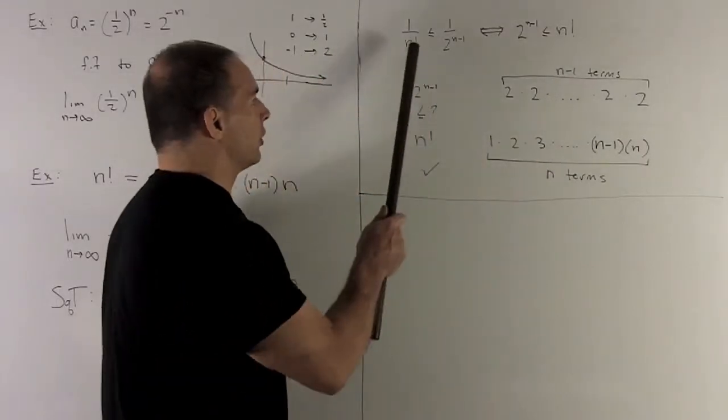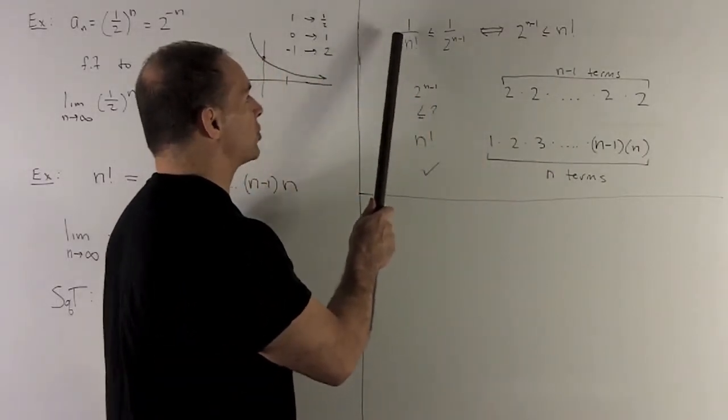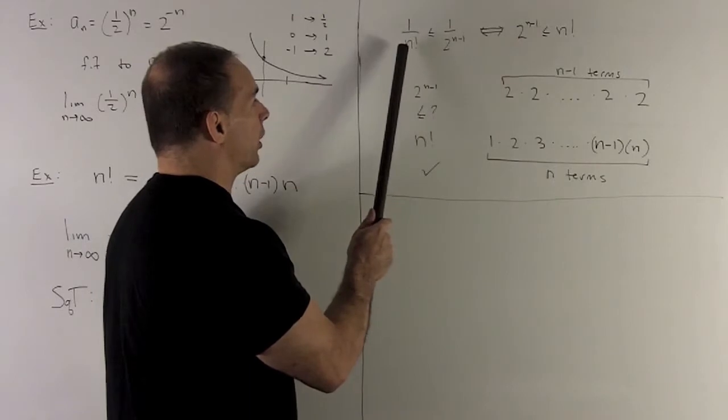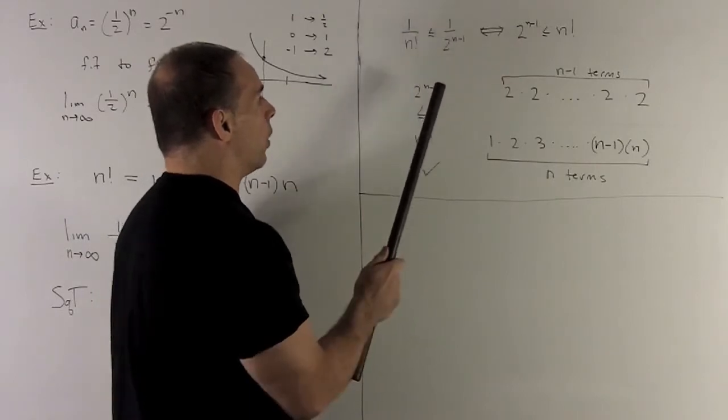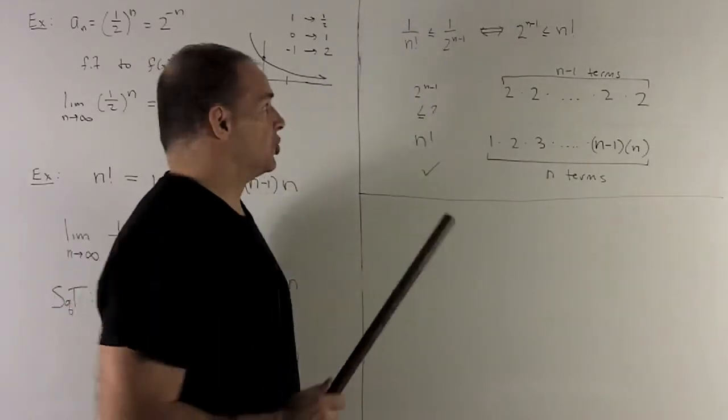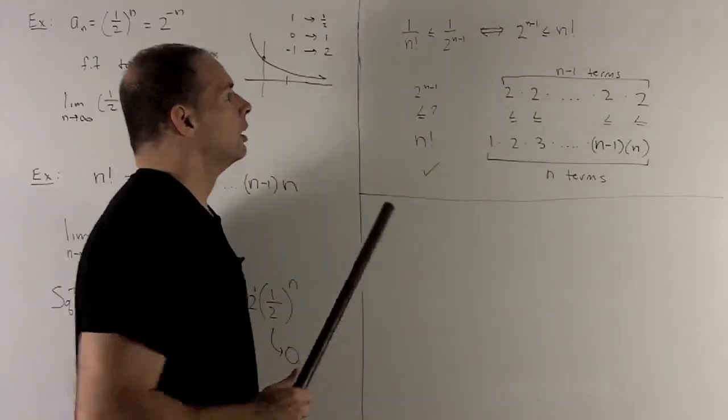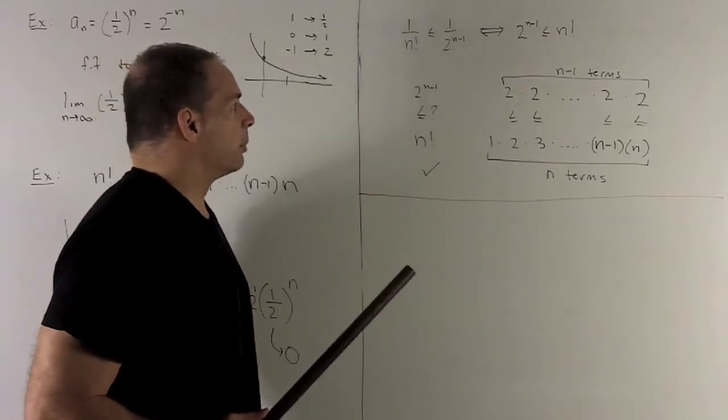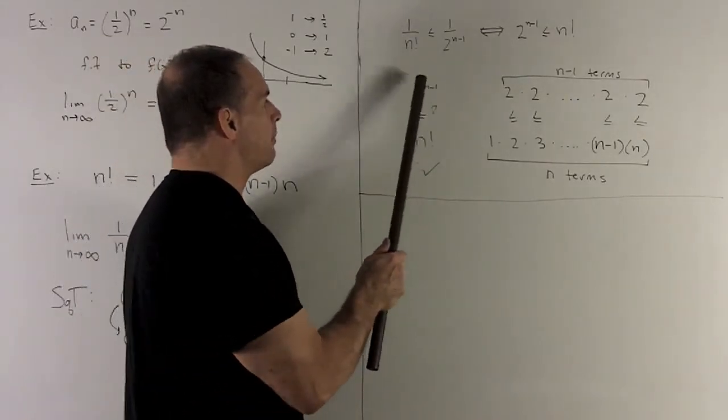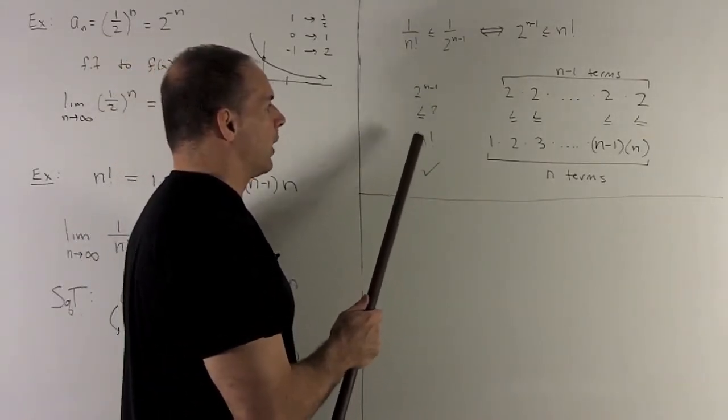So to do that, first let's clear the denominators. We're going to multiply both sides by n factorial times 2^(n-1). So all that does is just switch the 2^(n-1) here and the n factorial over there. So now let's line things up. We're checking: is 2^(n-1) less than or equal to n factorial?